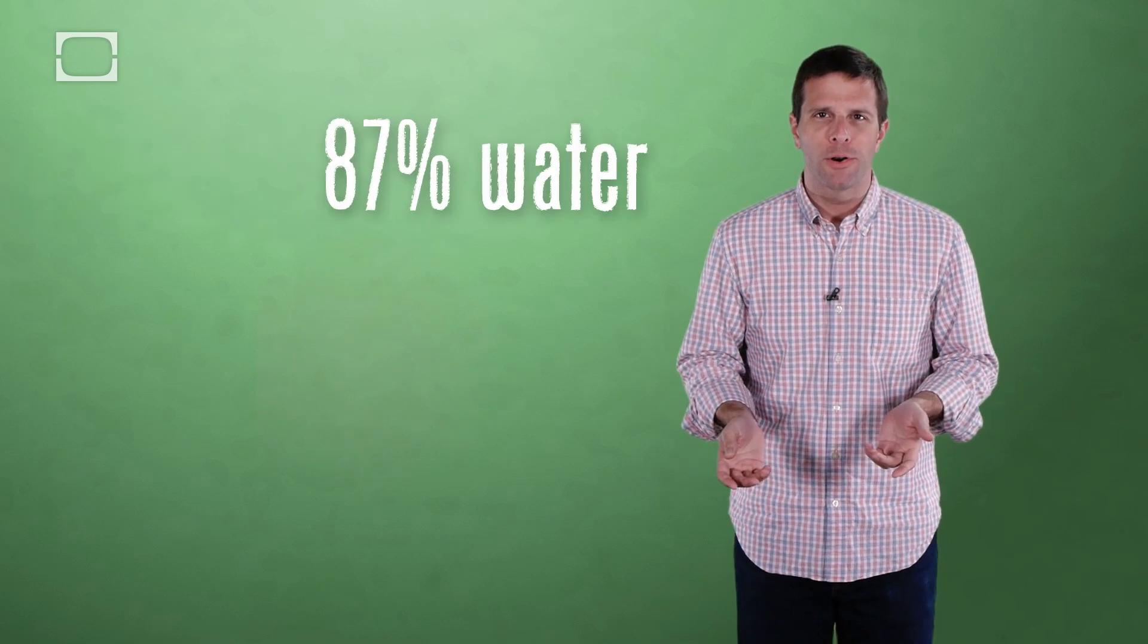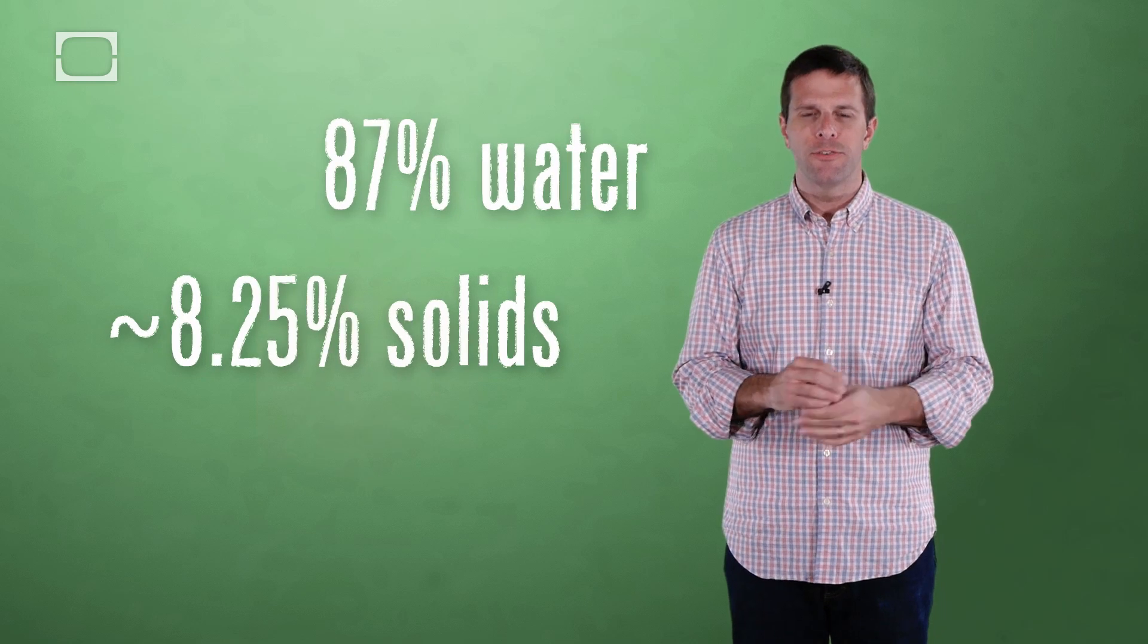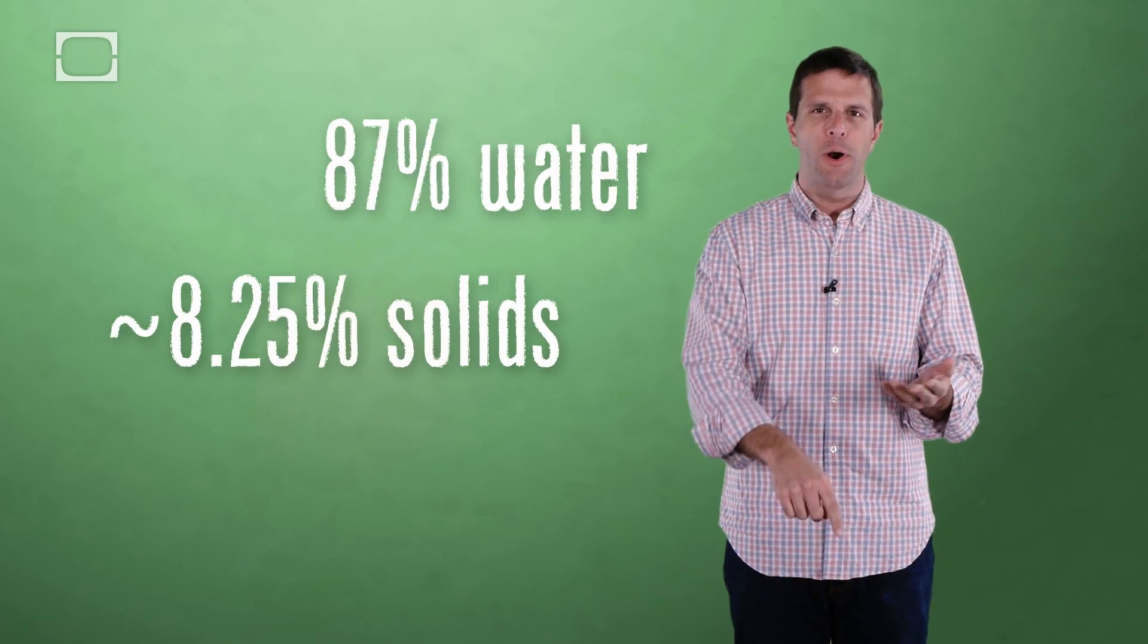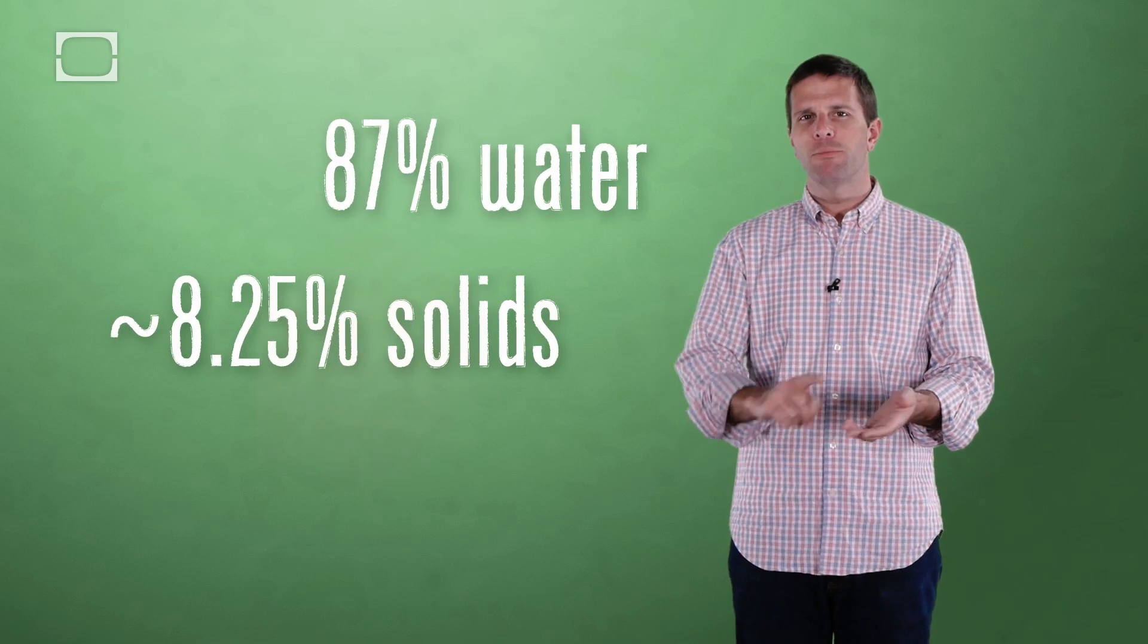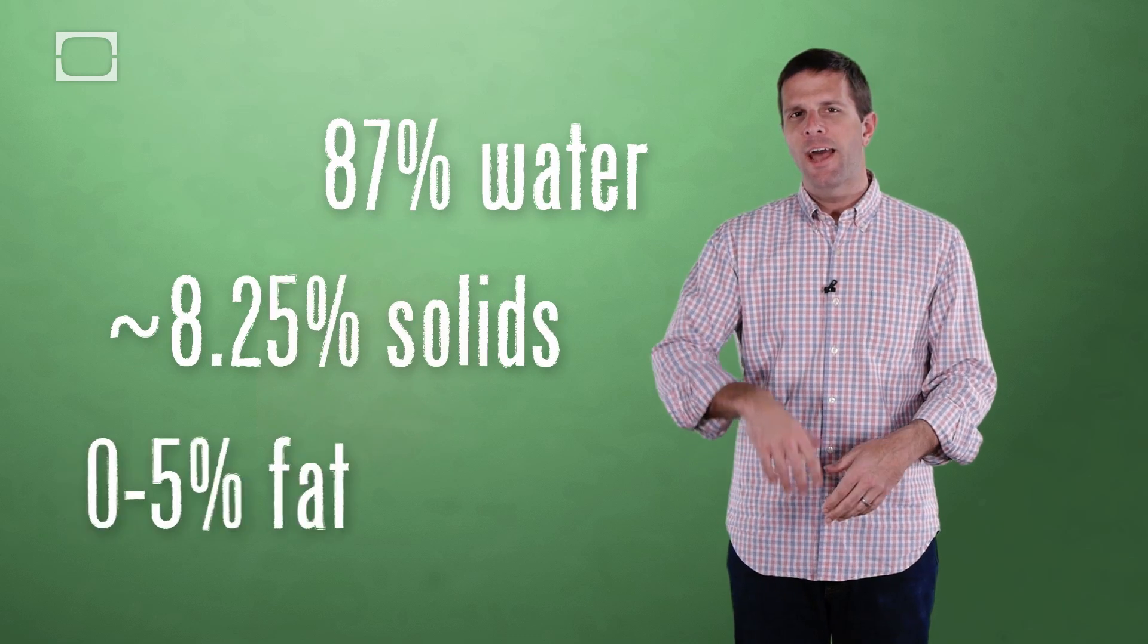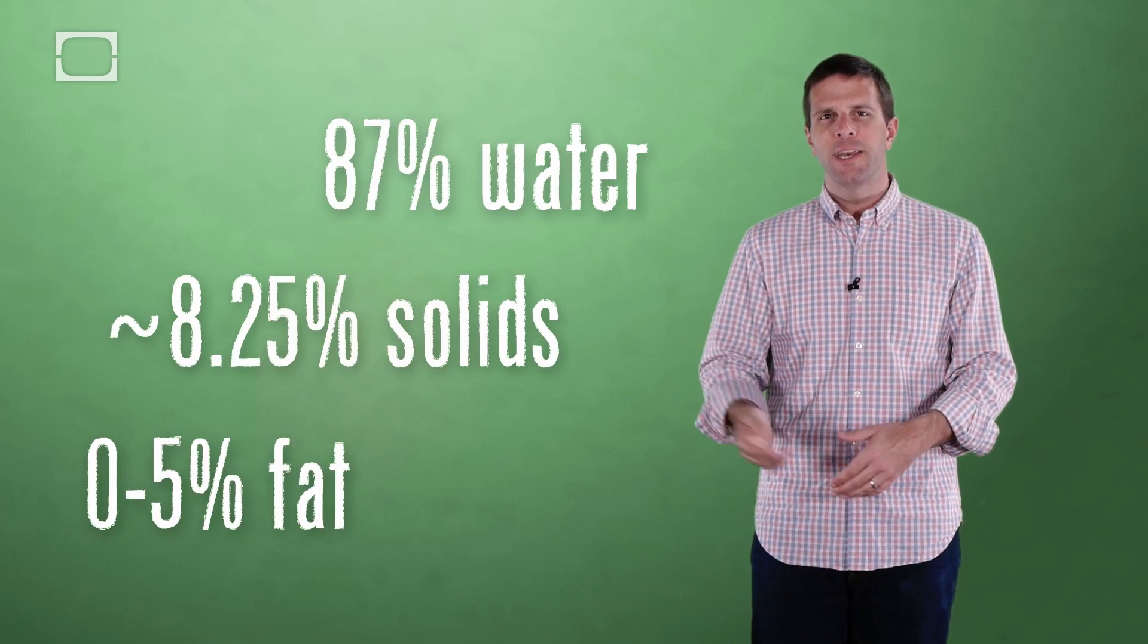See, all milk is generally pretty much the same. It's 87% water, about 8.25% solids, that's your protein, your carbohydrates, your vitamins, your minerals, all that kind of stuff. And then what you have left over typically is fat. And fat, as you may have guessed, the fat content is what explains the differences in those types of milk and hence the different colors of those kinds of milk and the little cap and everything.